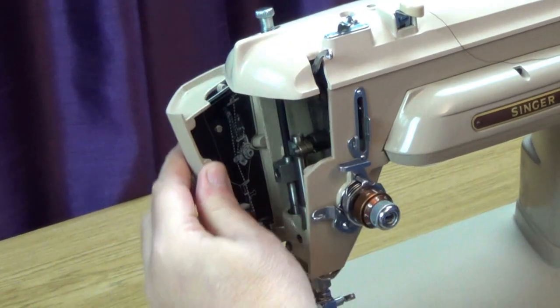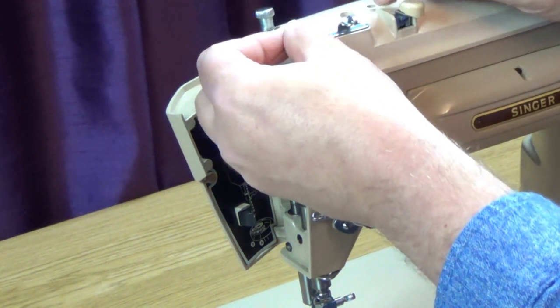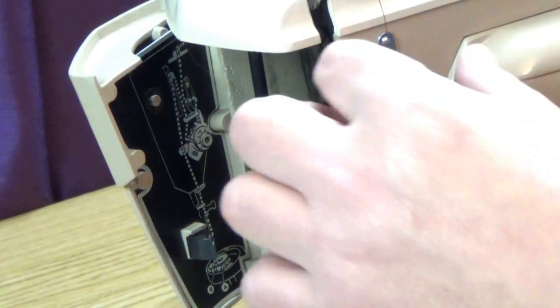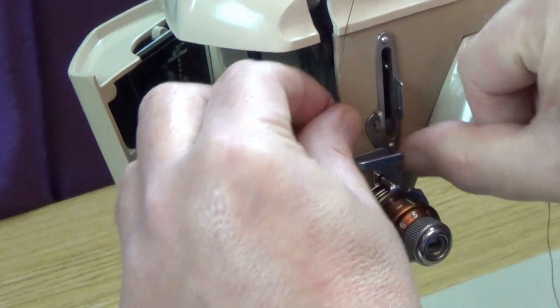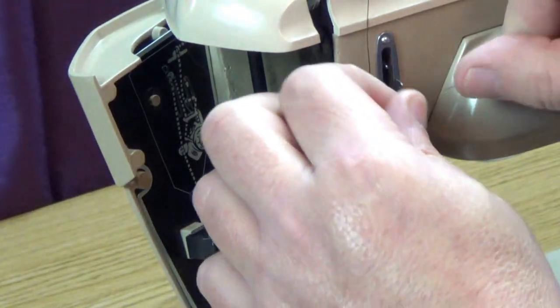As always on the 400s, there's a handy threading guide inside the front cover. Take the thread over the top guide, and down to the secondary take-up lever. The thread goes under the left-hand guide, and over and into the right-hand guide.